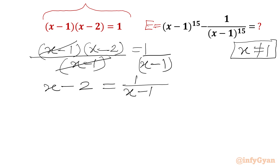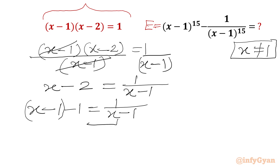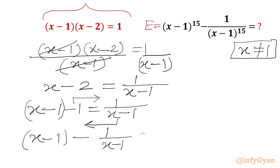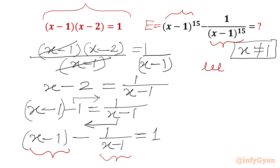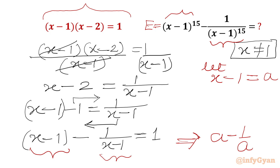Now I will split minus 2 as minus 1 minus 1, giving x minus 1 minus 1 equal to 1 over (x minus 1). Rearranging, we get x minus 1 minus 1 over (x minus 1) equal to 1. Now let us substitute A equal to x minus 1, so our known equation becomes A minus 1 over A equal to 1.